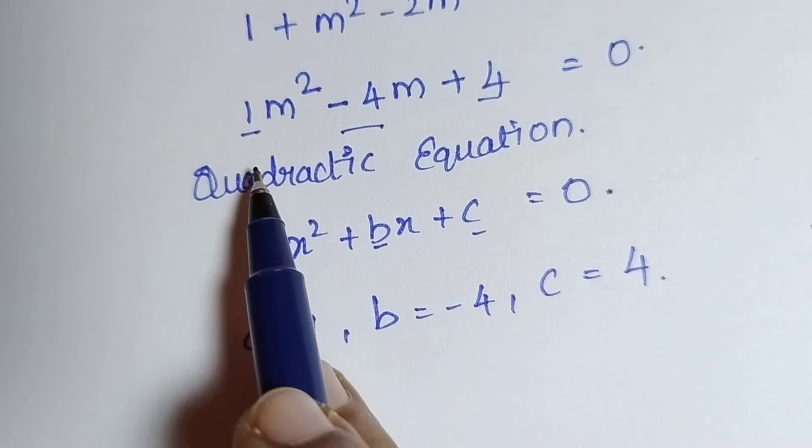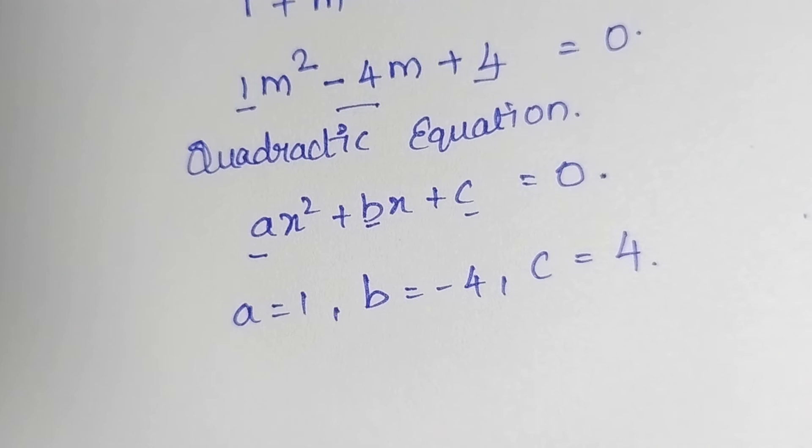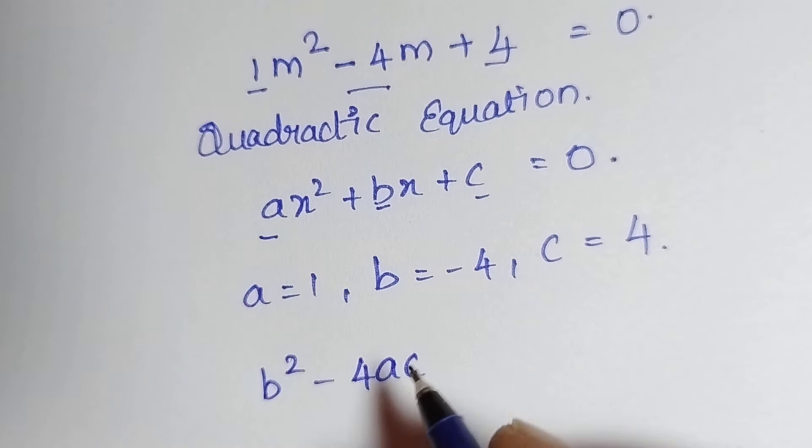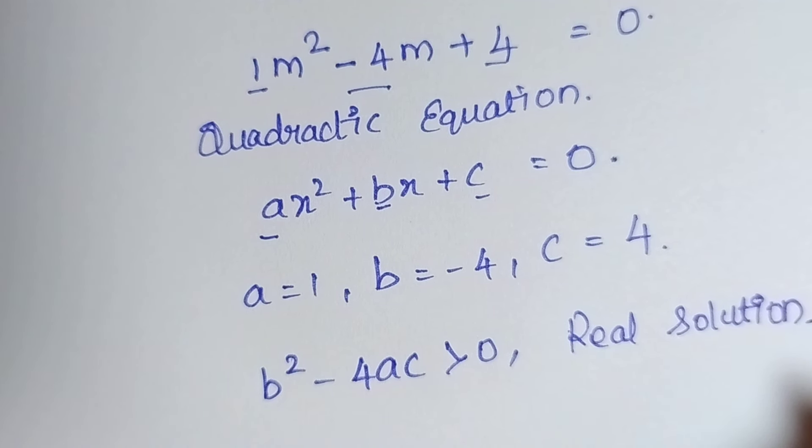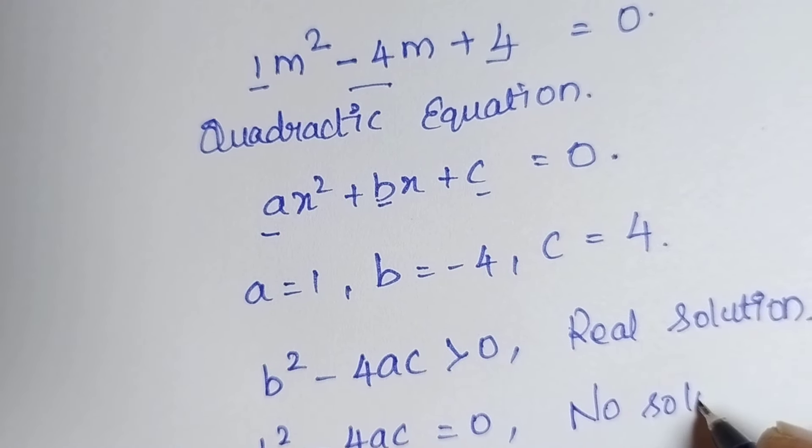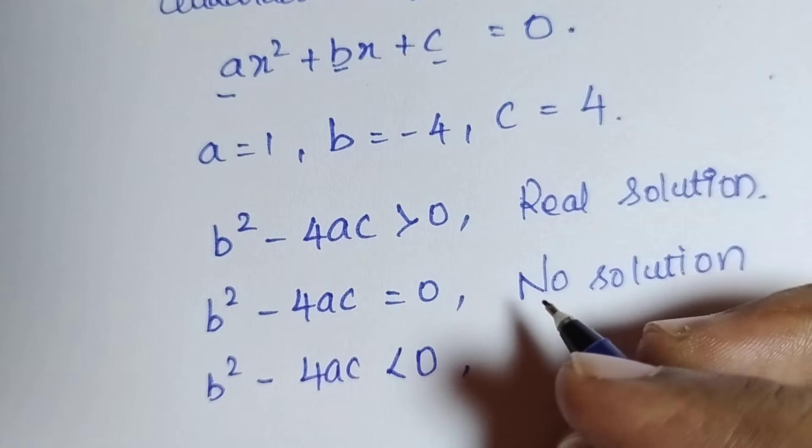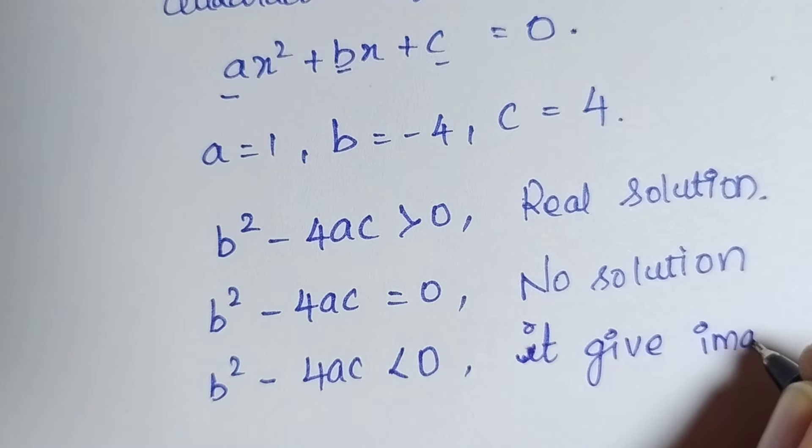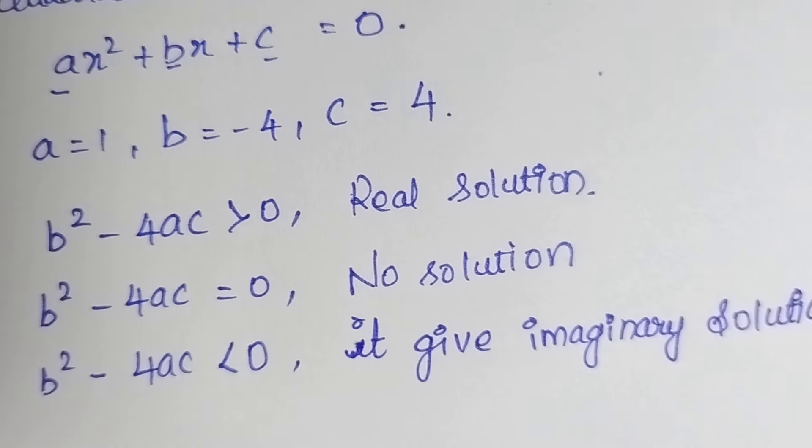Before we are moving to the solution, because it may get answer or not, we need to know. For that we have an option, that is we need to check with b square minus 4ac. If b square minus 4ac is greater than 0, then we will get the real solution. If b square minus 4ac is less than 0, it gives imaginary solution.